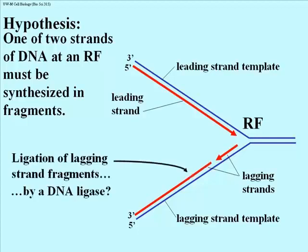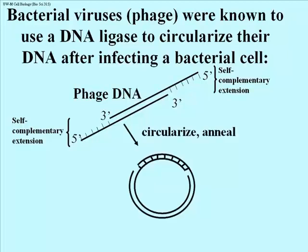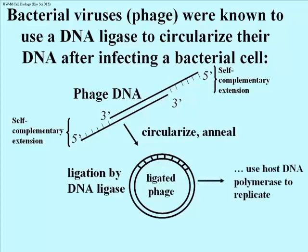The enzyme that stitches the fragments together is a DNA ligase. DNA ligase was known for a different function before it was shown to be essential in replication. During a viral infection in bacteria, the DNA that enters the cell is a linear molecule with sticky or complementary ends. Once in the bacterial cytoplasm, the linear DNA circularizes because of self-complementary ends. Then a DNA ligase encoded by the viral genome is produced in the infected cell to covalently close the circle.